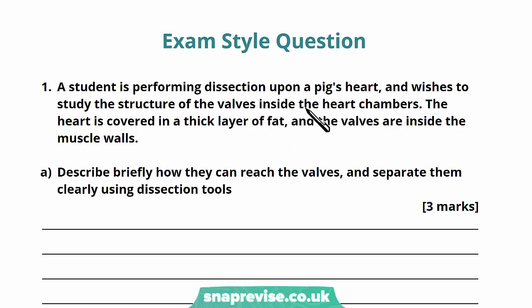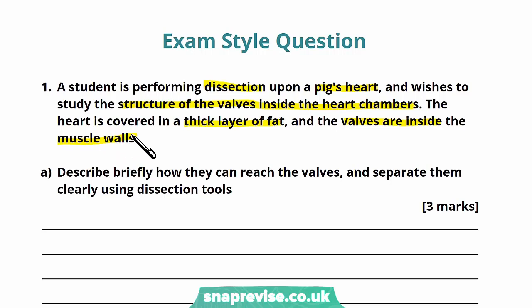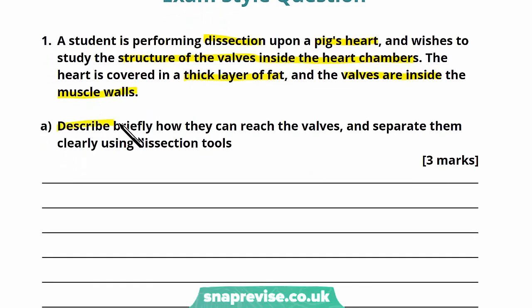So we've got a question here. It says: a student is performing dissection upon a pig's heart and wishes to study the structure of the valves inside the heart chambers. The heart is covered in a thick layer of fat and the valves are inside the muscle walls. Part A says: describe briefly how they can reach the valves and separate them clearly using dissection tools.